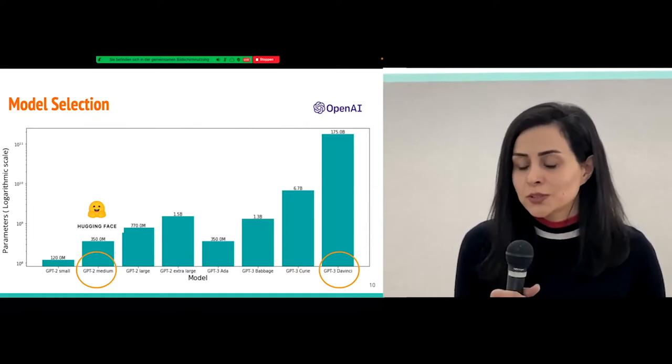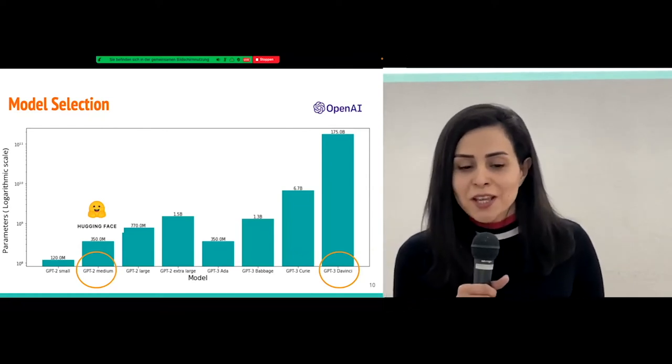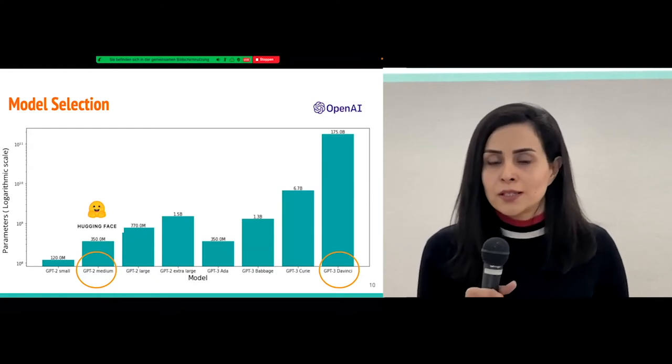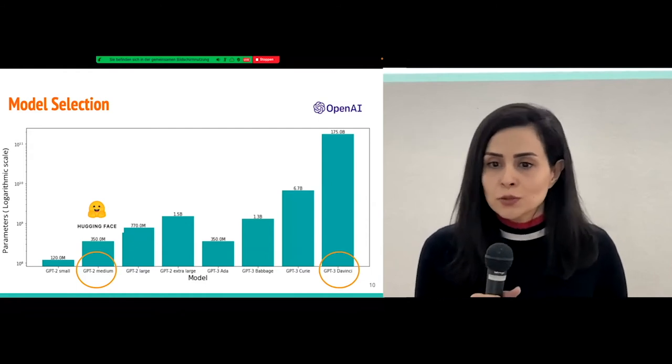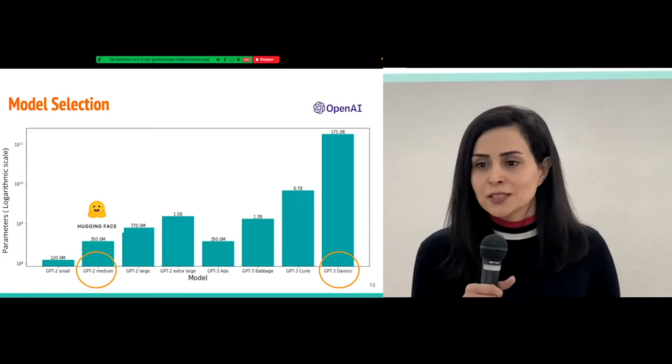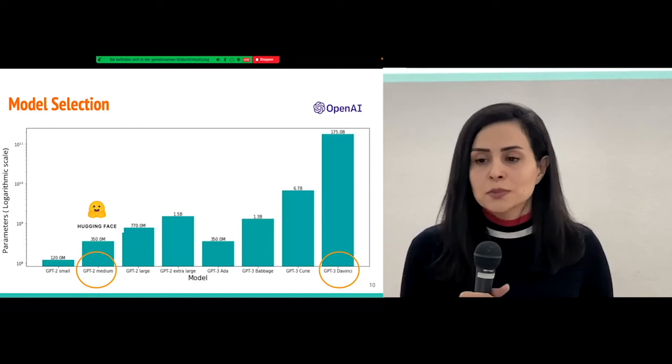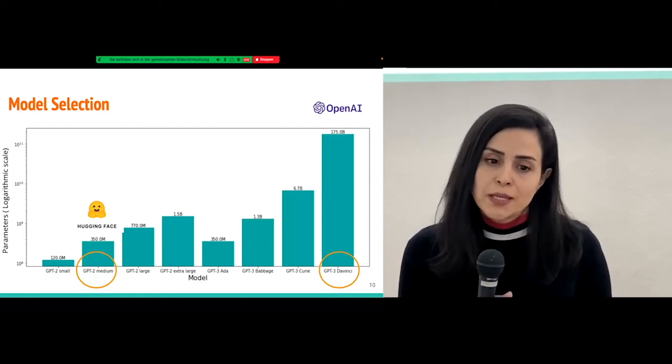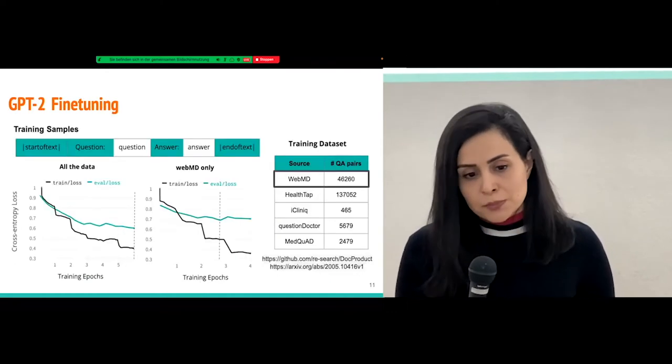So we decided to use this model and explore its capabilities to answer health-related questions. But we also wanted to use a model that we could train on a local machine, on a single GPU. And GPT-3 is not open sourced. And even if it was, it's so big that we cannot handle it on a single GPU. So we looked for the biggest model that it was possible to be trained on a single GPU, and that was GPT-2 medium, which is available by Hugging Face transformers. So we selected this model.